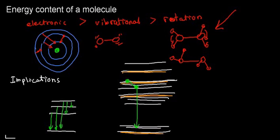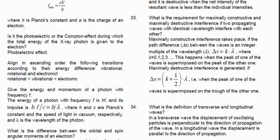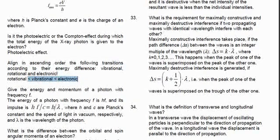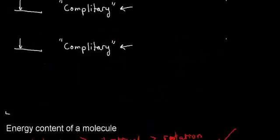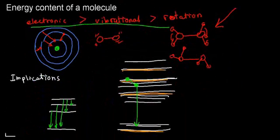That's pretty much all we need to know about that. To summarize: arrange in ascending order the following transitions according to their energy differences — the answer is electronic is the most potent, then vibrational, then rotational. That's it for the third lecture of week two. Hopefully you found this helpful; see you in the next video.